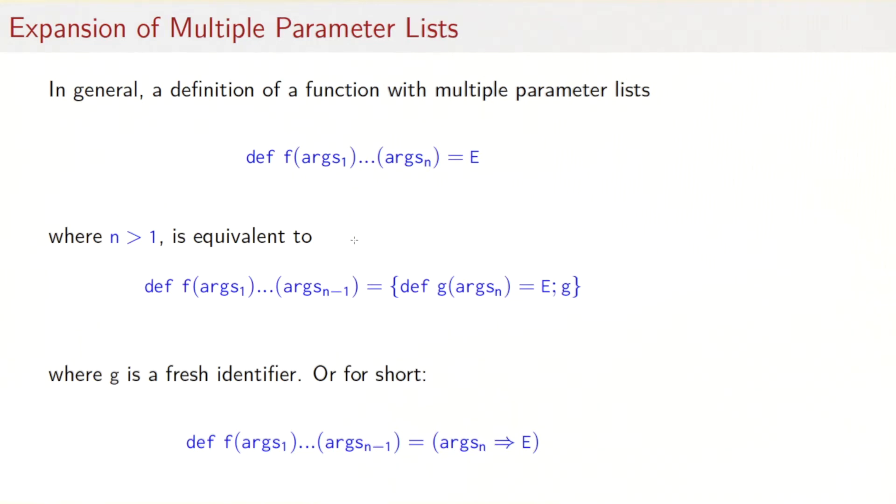So I've said that functions with multiple parameter lists are syntactic sugar. Let's see how they expand. If you have a function with multiple parameter lists like that, args one to args n equals e, where n is greater than zero, that's in fact equivalent to taking the first n minus one number of parameter lists. And for the last one, you create a fresh function called g that takes the last list, maps it to the body e, and g is the function that gets returned from f. That was exactly the definition we did with sumF when we modeled the sum function that drops the second parameter list by having the inner function sumF.